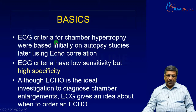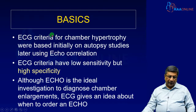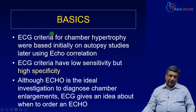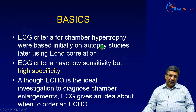The basic ECG criteria of chamber hypertrophy — each chamber enlargement diagnosis is done by a particular criteria from the ECG. These ECG criteria had been developed on the basis of autopsy studies. They did the autopsy, found out that a particular enlargement was present in a patient, and then identified the corresponding ECG change. In this way, they have developed ECG criteria.